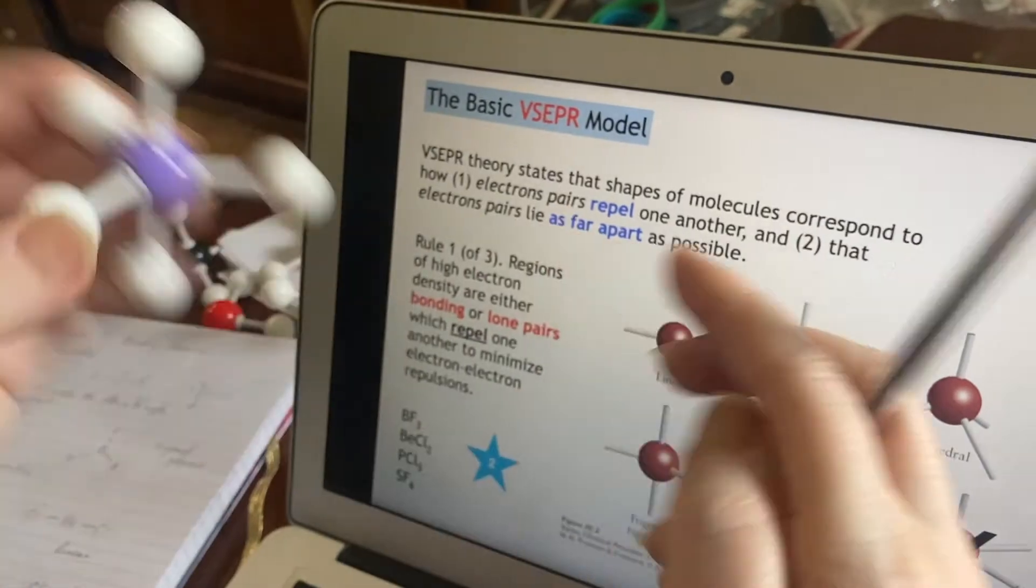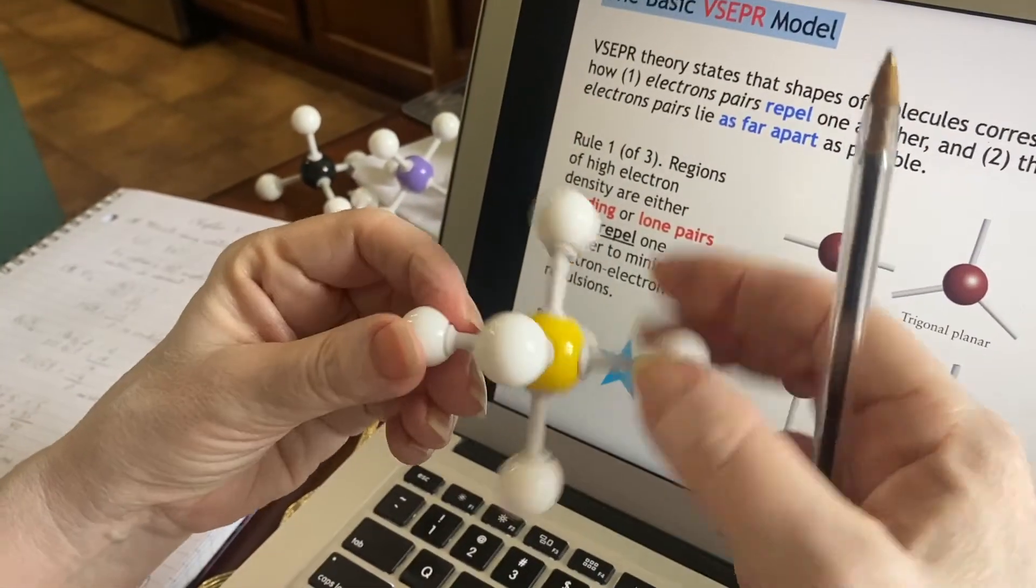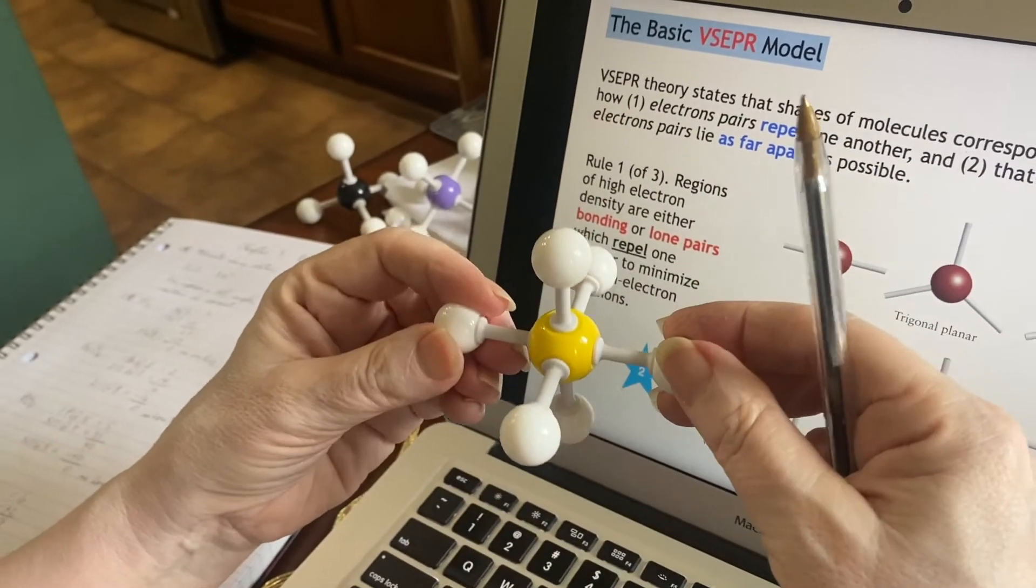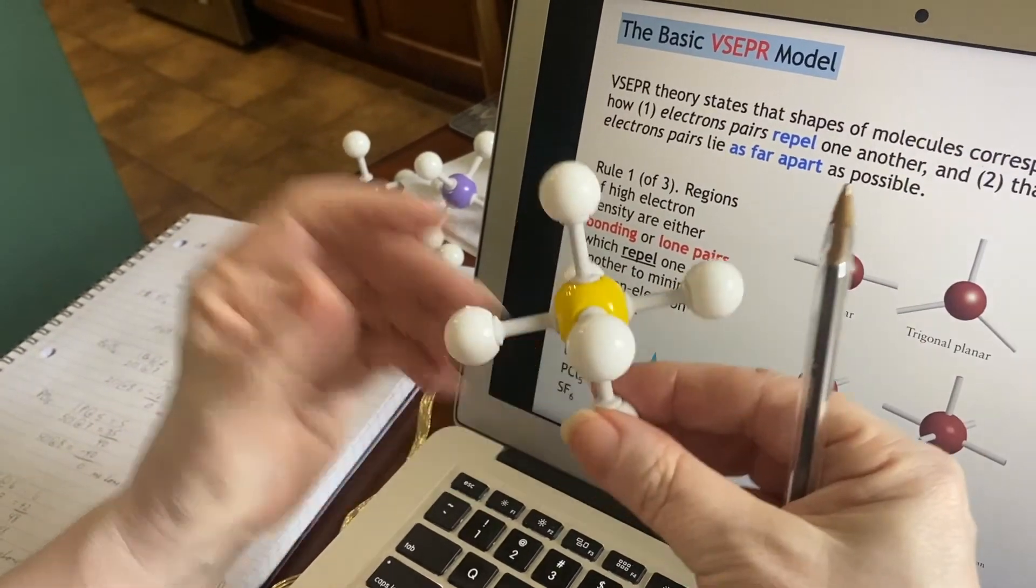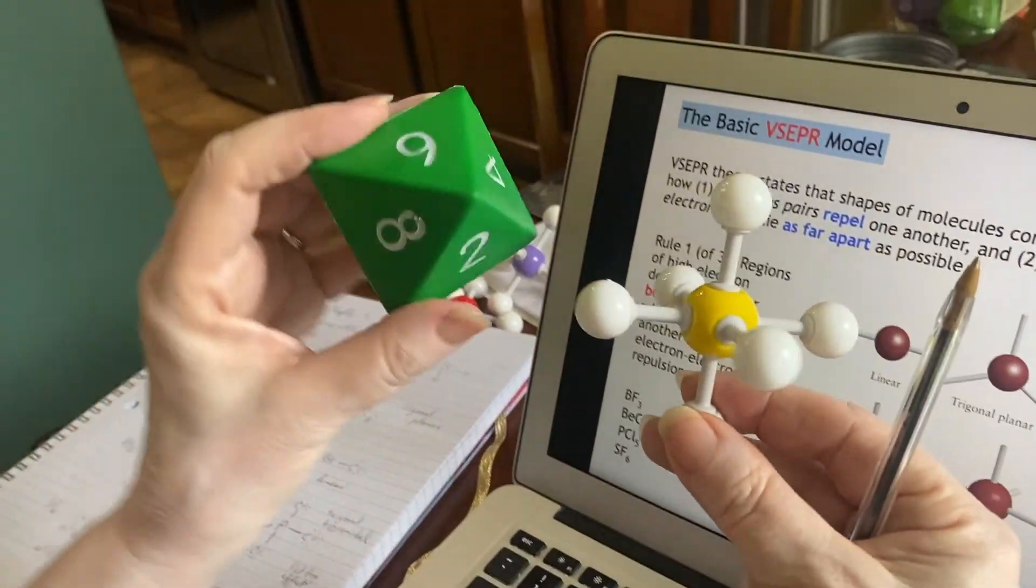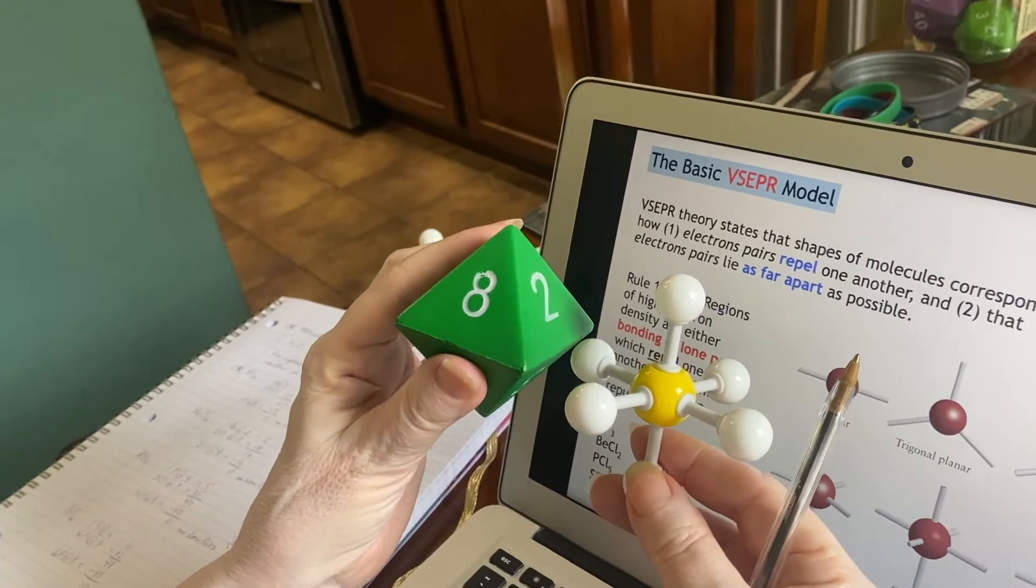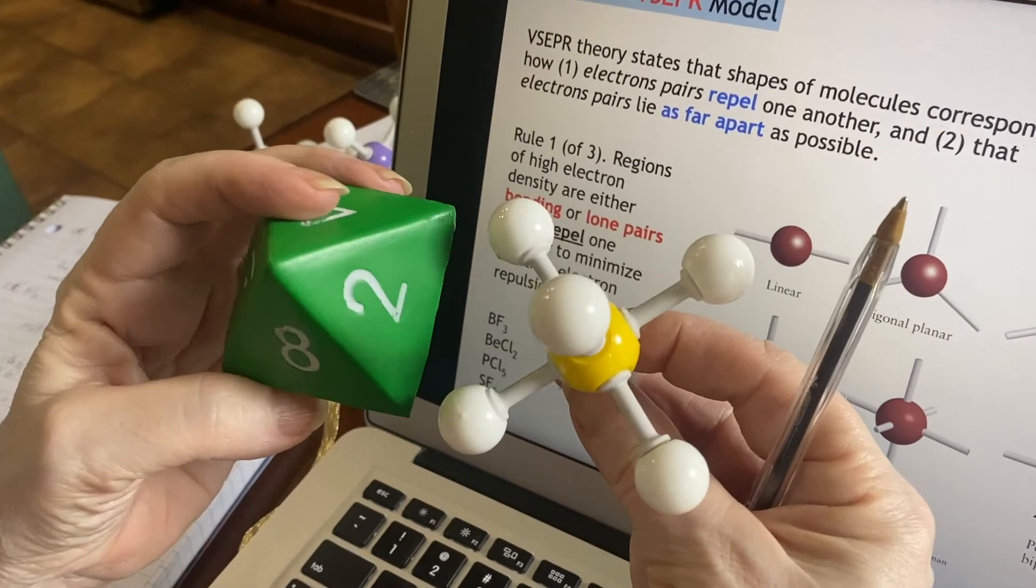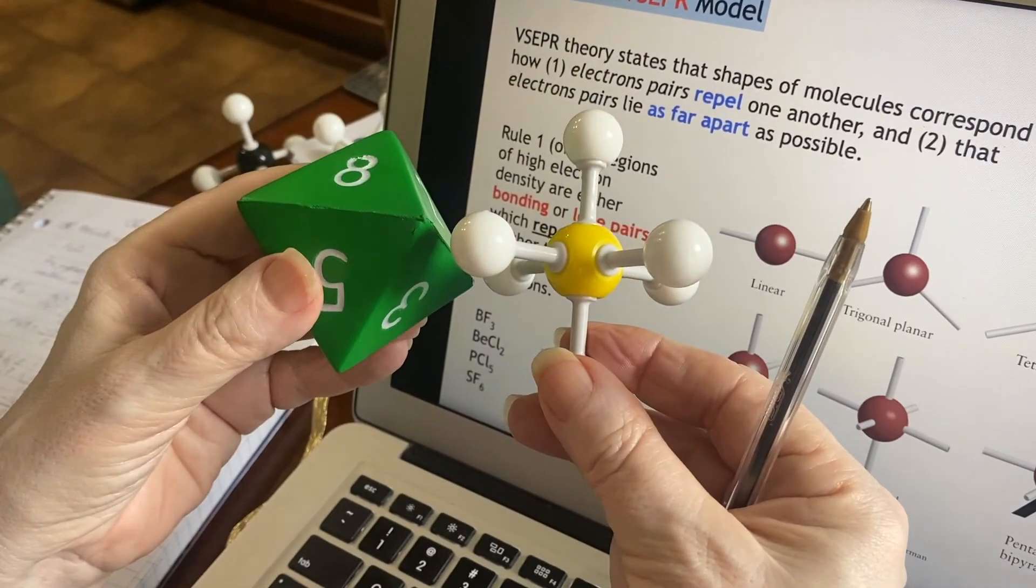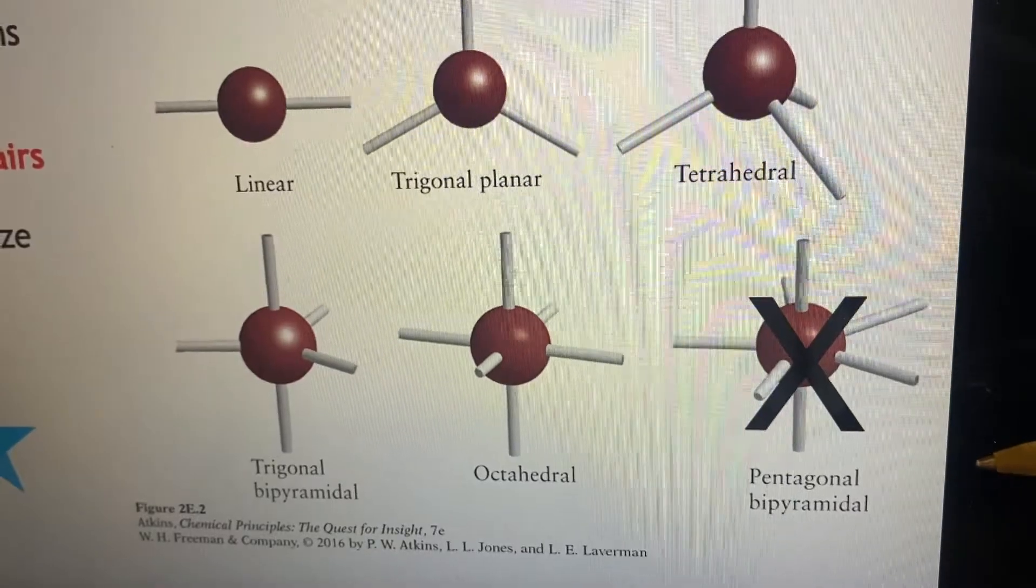So trigonal bipyramidal, and what is called the octahedral. And this is the one that everybody kind of gets confused by because I see six vertices, but it's not named for the vertices. It's named for the flat shape. So this eight-sided die represents the octahedral shape. It has six vertices and eight faces. I'm not holding you responsible for the pentagonal bipyramidal.